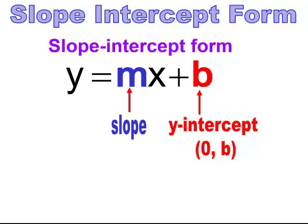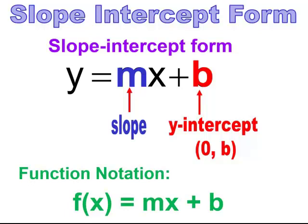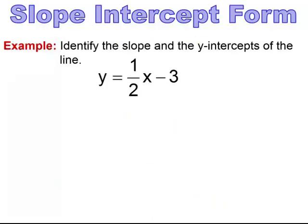You always have a point when you have an equation in slope-intercept form. Note that we can also write it in function notation as f(x) equals mx plus b — f(x) and y are the same thing. For example, in y equals 1/2 x minus 3, the slope is 1/2 (the coefficient of x), and the y-intercept is negative 3, so the ordered pair is (0, -3).